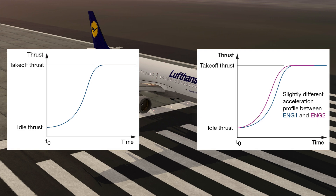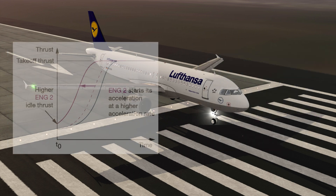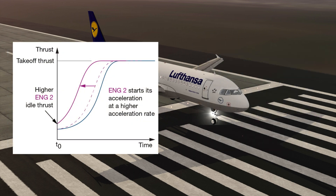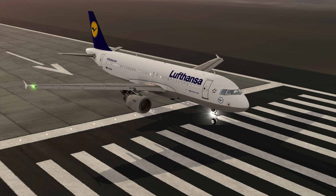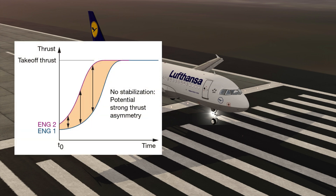Every engine has its own performance level due to manufacturing tolerances. In addition, engine performance evolves with time due to wear and aging. As a consequence, the acceleration profiles may slightly differ from one engine to another on an aircraft, even if fitted with new engines. Similarly, the idle thrust can slightly differ from one engine to the other, moving the acceleration profile to the left on the graph. If the flight crew applies takeoff thrust directly from idle thrust without doing any stabilization step, the difference in engine acceleration performance could cause a strong asymmetric thrust condition that could be difficult to counteract with nose-wheel steering only, due to limited effectivity of the rudder at low speed.